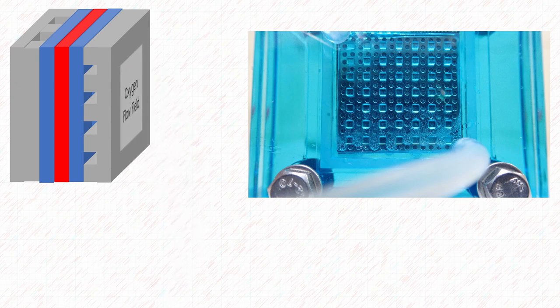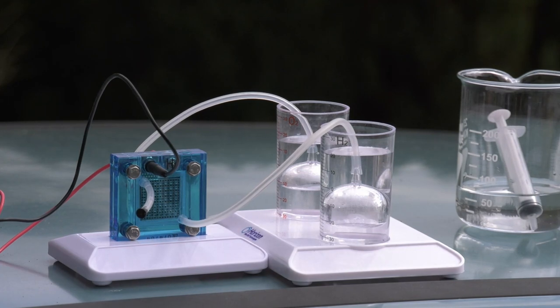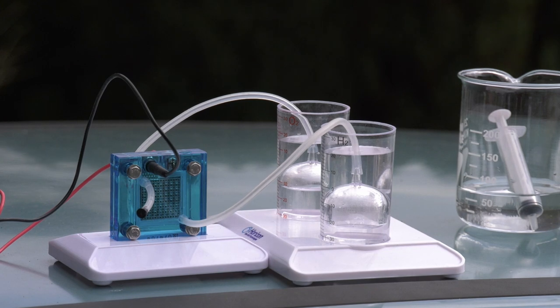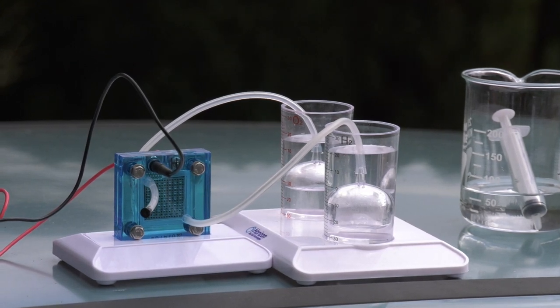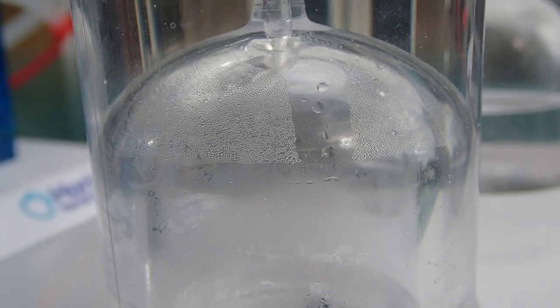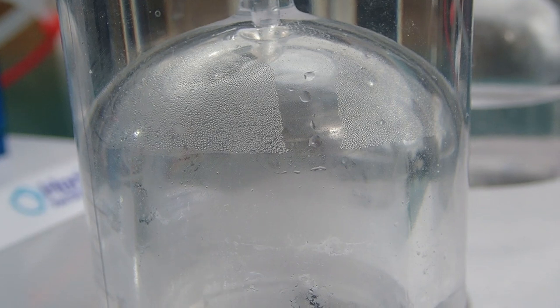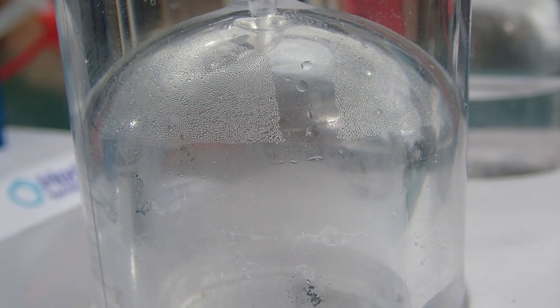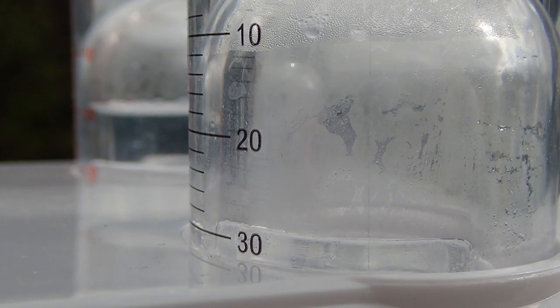Now let's see this in action. The electricity comes into the fuel cell and here the fuel cell will break down the water into hydrogen and oxygen. The hydrogen is collected in one of these storage containers and then the oxygen is collected in the other container.